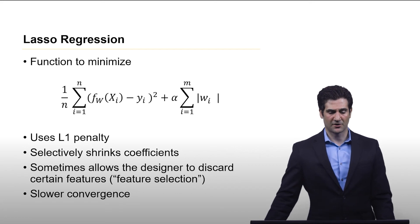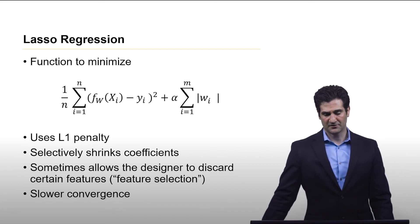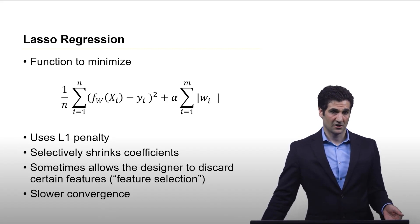The next type is lasso regression. Here you're just adding in a sum of the absolute value of the weights. This is going to be more selective on which coefficients it shrinks, which weights it shrinks.